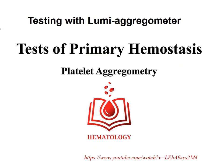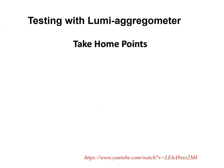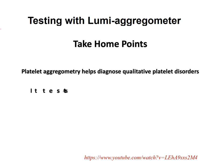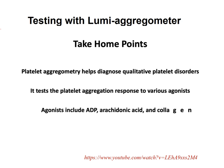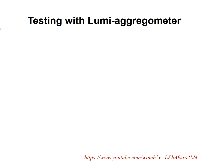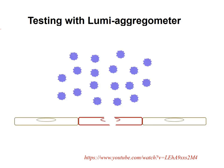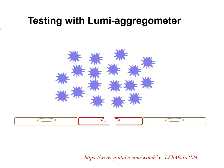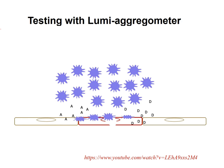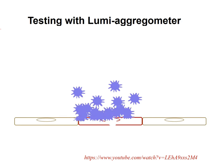Platelet aggregometry helps diagnose qualitative platelet disorders by testing the platelet aggregation response to various agonists. Common agonists include ADP, arachidonic acid, and collagen. When the intact endothelium is injured, platelets near the injury encounter agonists, become activated, and expose the GP2B3A receptor. Platelets then adhere to the endothelial surface, encounter additional agonists, and secrete the contents of their alpha and delta granules — releasing adhesive proteins and agonists that stimulate platelets to aggregate.